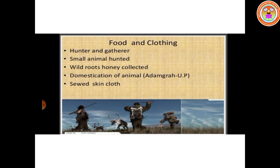Food and clothing during the Mesolithic age: Mesolithic people were hunters and food gatherers. They hunted small animals, ate roots, and collected honey. They also domesticated animals. They wore skin cloth and sewed skin cloth.